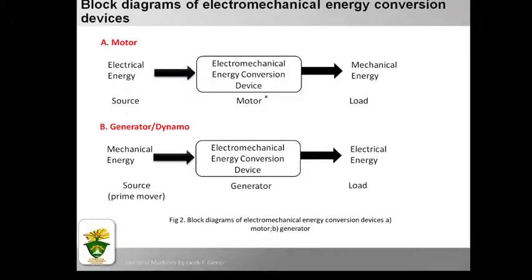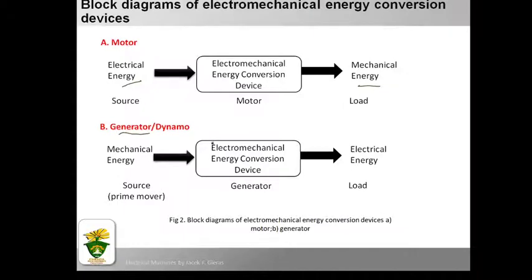Now we have here some of the block diagrams of electromechanical energy conversion. We have a motor that converts electrical energy to mechanical energy. We also have a generator — the block diagram of the generator or dynamo — which converts mechanical energy to electrical energy.